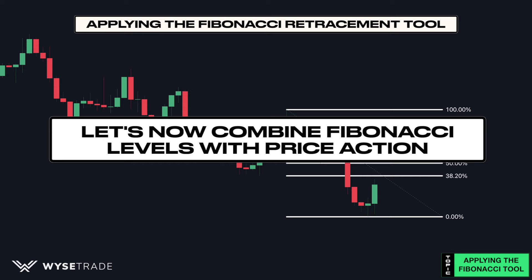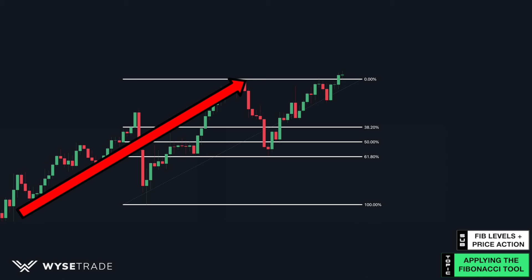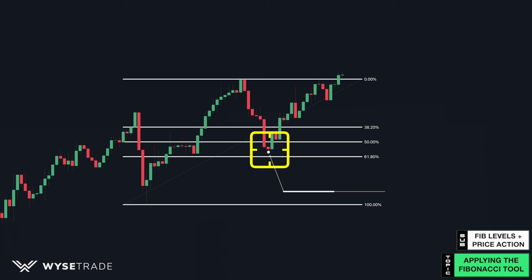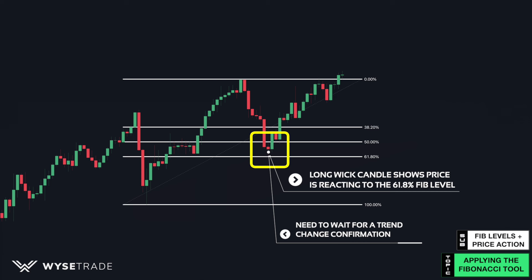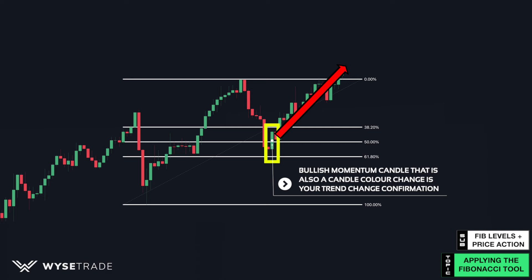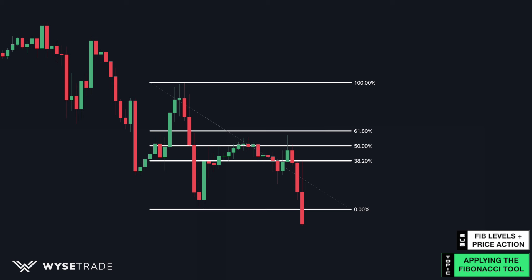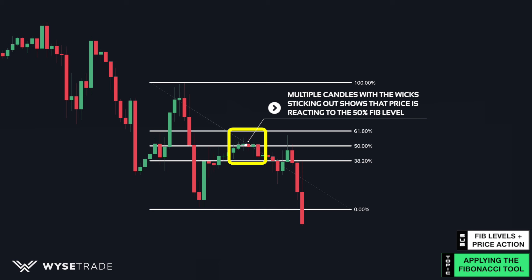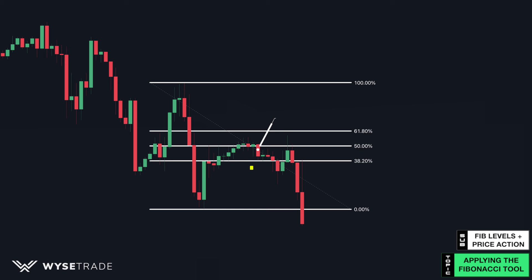Let's now show this combined with price action. In an uptrend through higher highs and higher lows, price pulls back to the 61.8% Fibonacci level, which represents a very deep pullback and an area of value. Long-wick candles formed right at the Fib level, showing that price is reacting to it. You then wait for a trend change confirmation — here a bullish momentum candle that is also a candle color change. In the opposite direction, in a downtrend, price pulls back to the 50% Fibonacci area. Multiple candles with wicks sticking out confirmed the reaction, and you wait for a trend change confirmation via a bearish momentum candle or after a double top pattern formed.